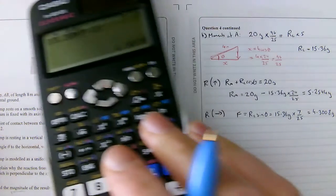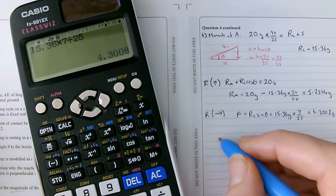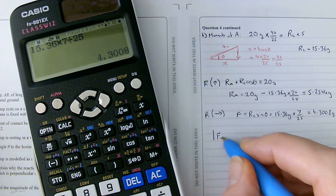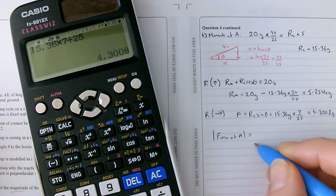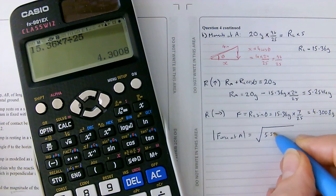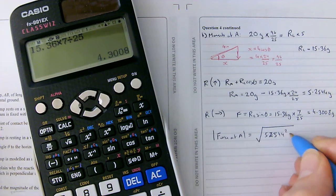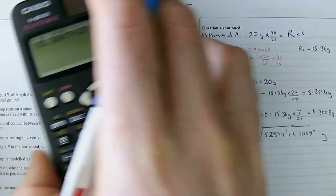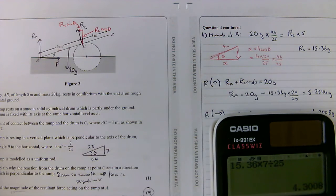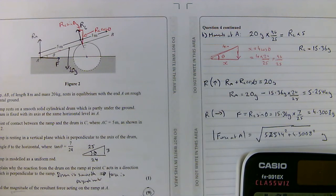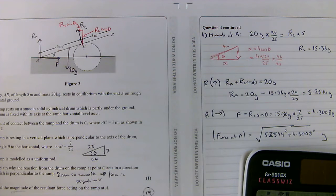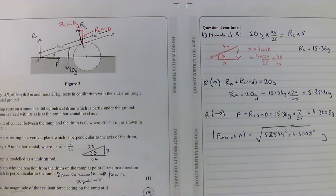Remember, I'm trying to find the reaction force, the magnitude of the force, so the magnitude of the force at A is going to be the square root of 5.2544 squared plus 4.3008G squared. And that gives me 4.3008 squared plus 5.2544 squared square root times 9.8 gives me an answer of 66.5 Newtons.